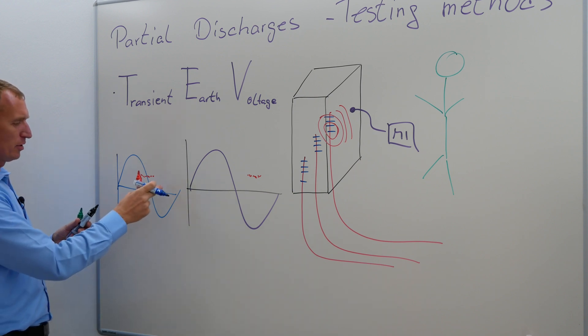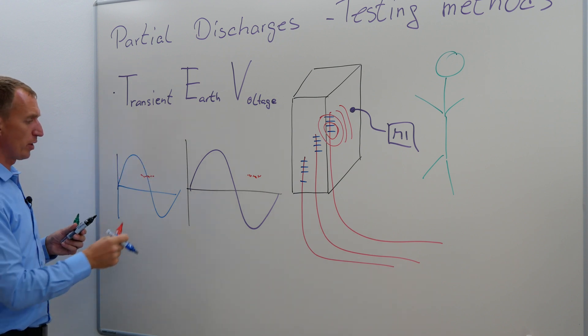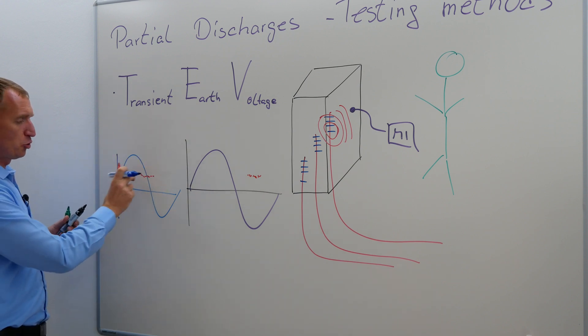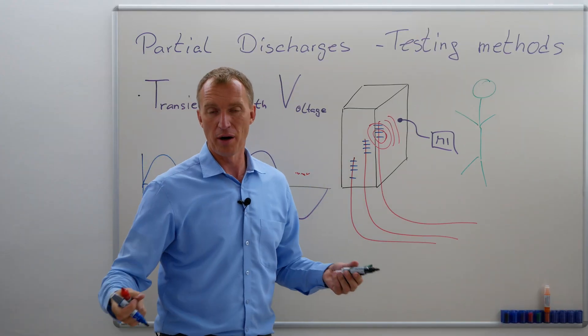I don't really know if it's on ground or in high voltage. Could be either of them, right? And I do not know the phase shift I have right now, but I'm quite sure I do have a partial discharge in there.